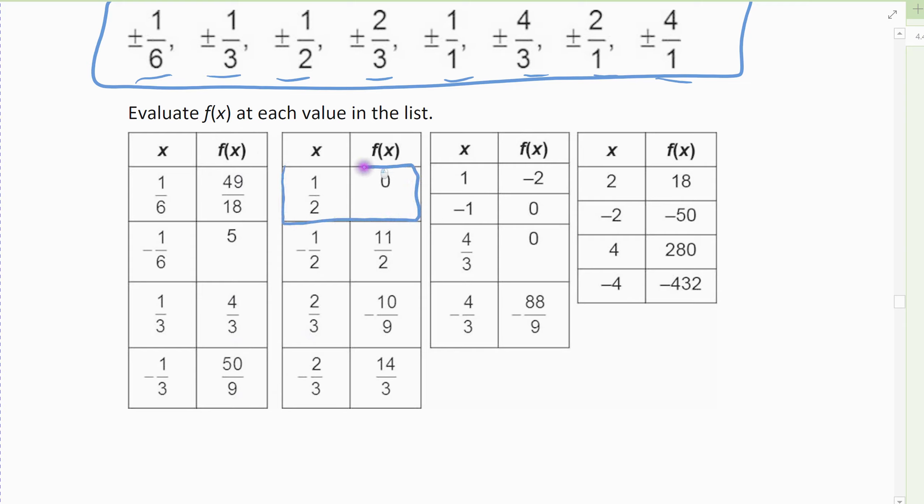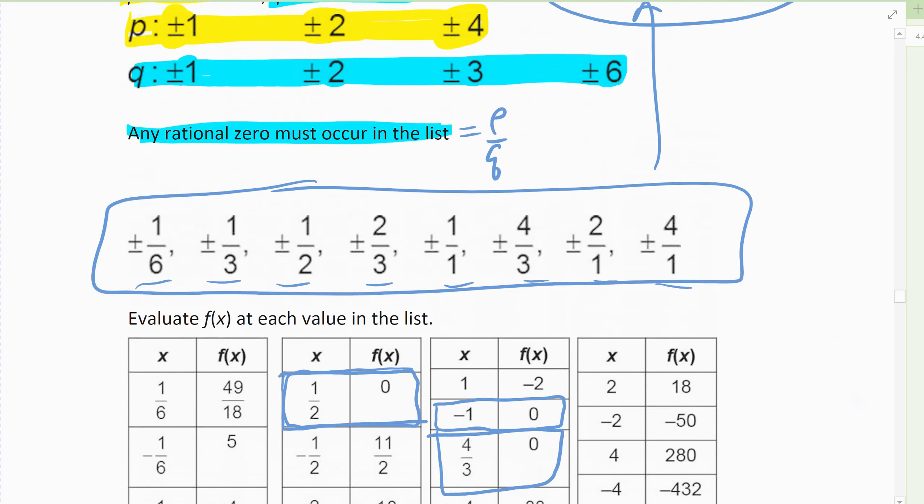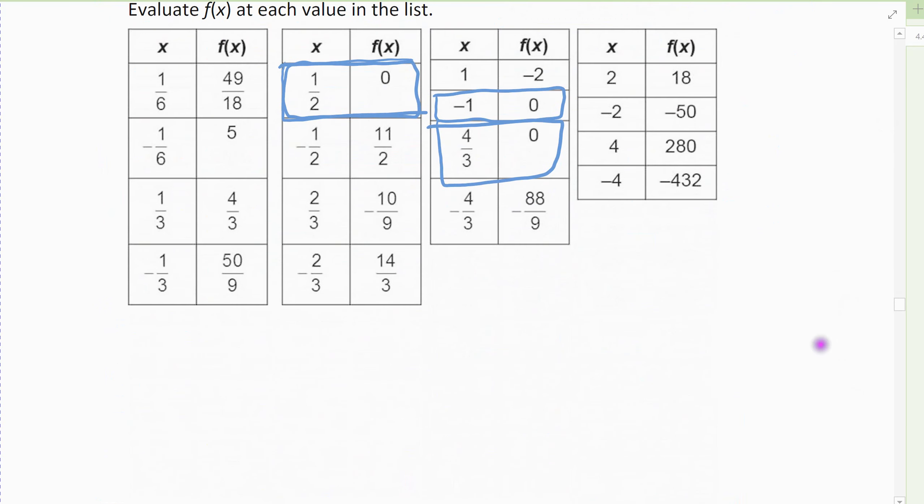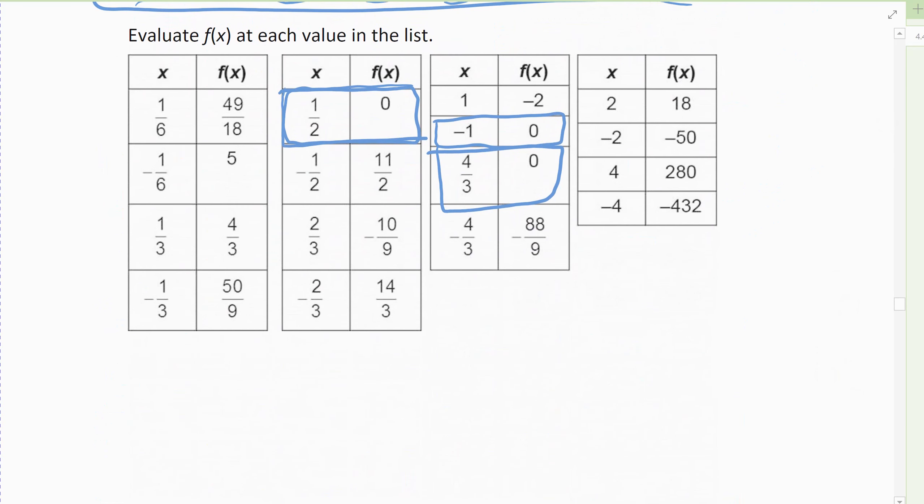And so the first zero is the 1/2. So there's a zero. I keep looking through my table. The next zero is at negative 1. And the next zero is at 4/3. And it would stop there. Because it's a cube, I can only have at most 3. So once I found 3 zeros, I could have stopped. Now I went through to verify that it was the case. All of the rest of them did not give me out zeros.